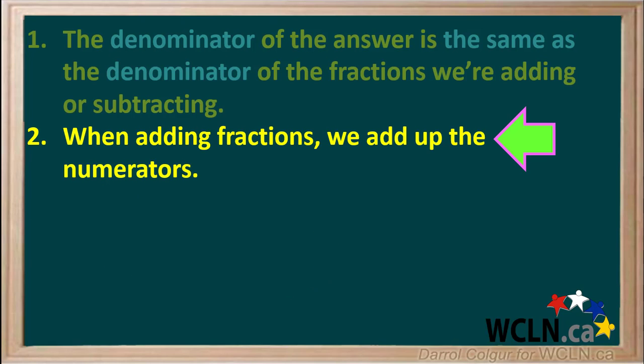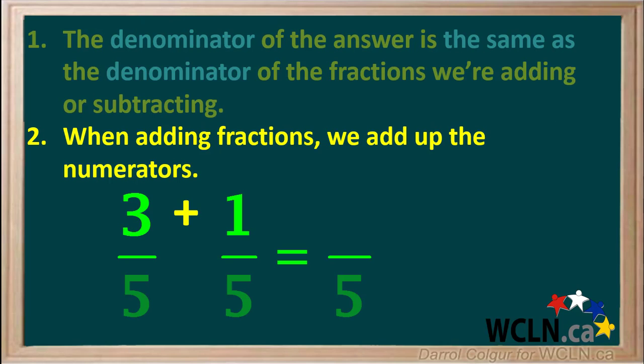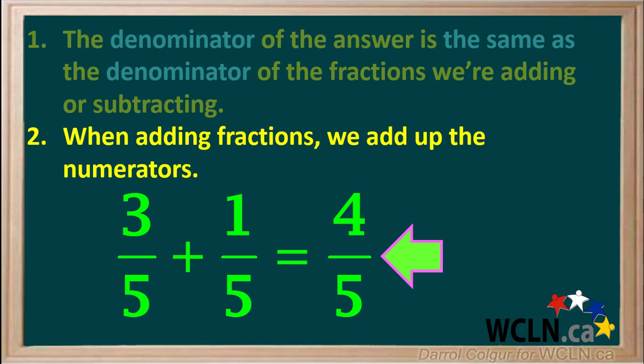The second thing is, when we're adding fractions, we add up the numerators in the fractions we're starting with to get the numerator in our answer. For example, when adding 3 fifths and 1 fifth, we add the numerators 3 plus 1 to give us 4. So, 3 fifths plus 1 fifth is equal to 4 fifths.